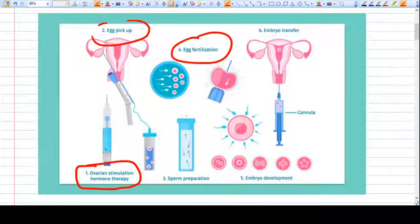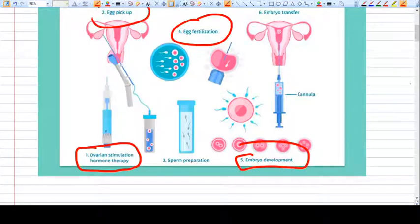We do egg fertilization with either IVF or ICSI. Then we make an embryo. We monitor the embryos for development; only embryos with good development are transferred into the uterus. You can transfer one, two, three, or four embryos at a time. This is how IVF is becoming very popular nowadays.